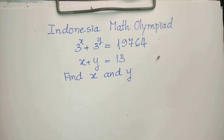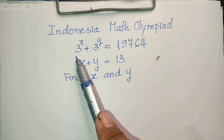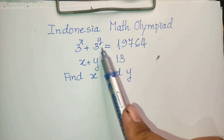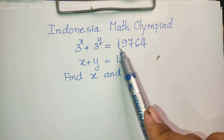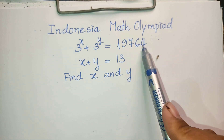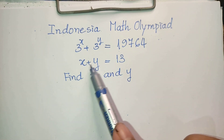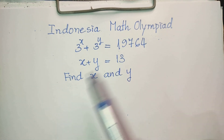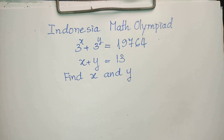Hello everyone, welcome to my YouTube channel. Today I have one exercise: 3 to the power h plus 3 to the power y equals 19764, and h plus y equals 13. Find h and y. Do you know how to solve this?